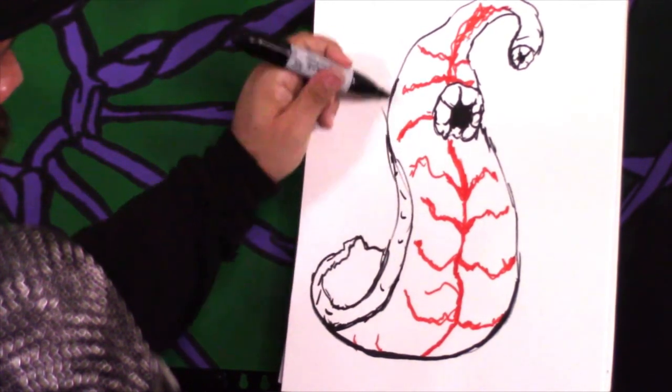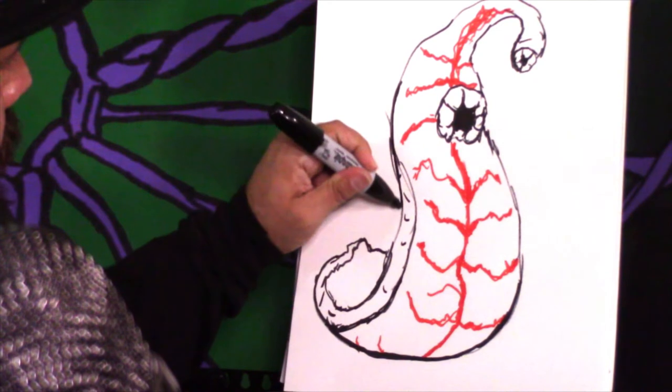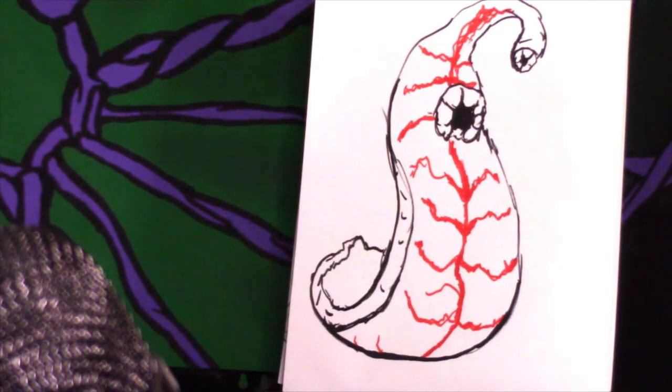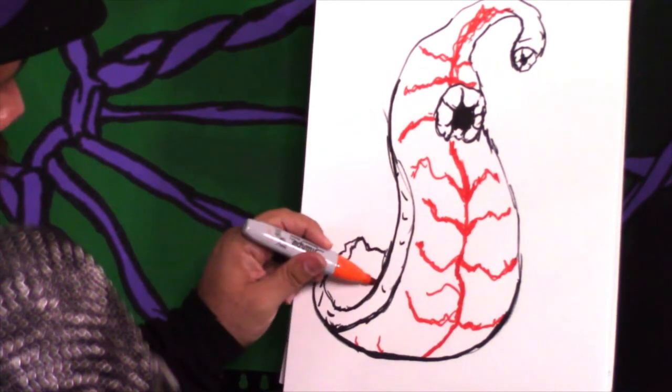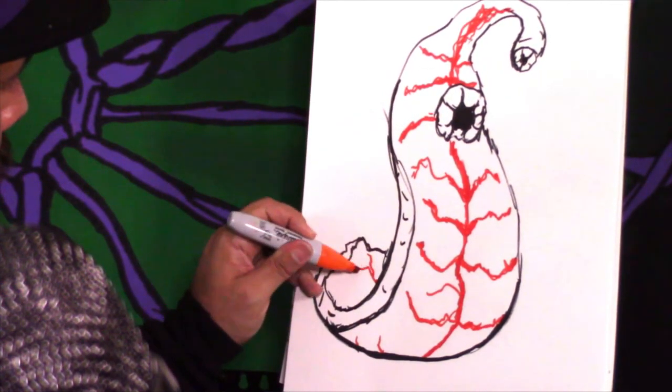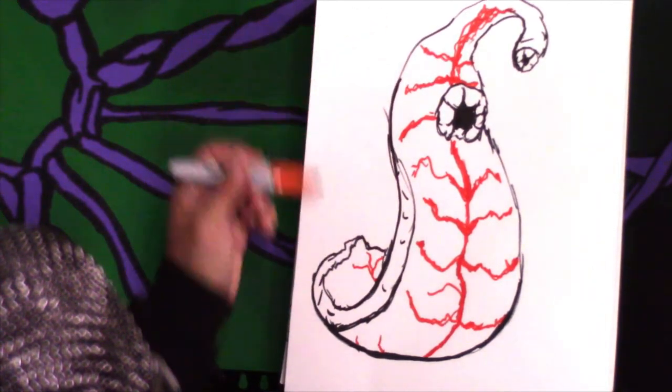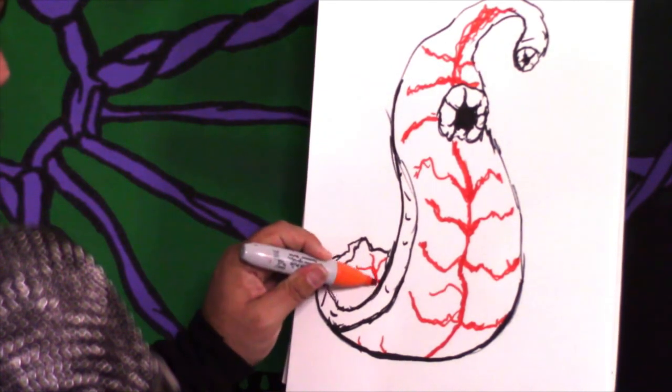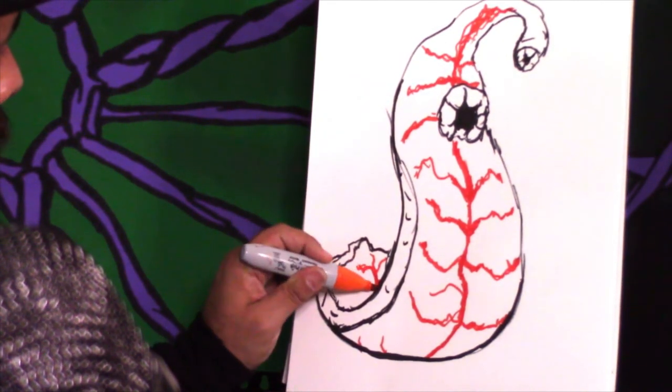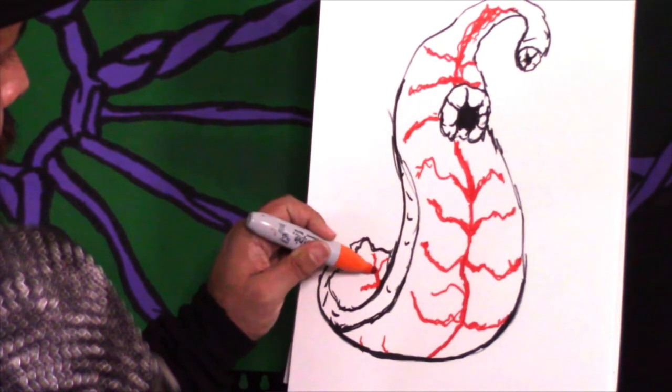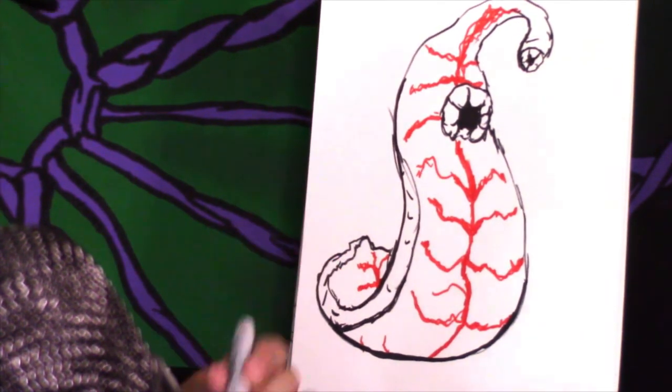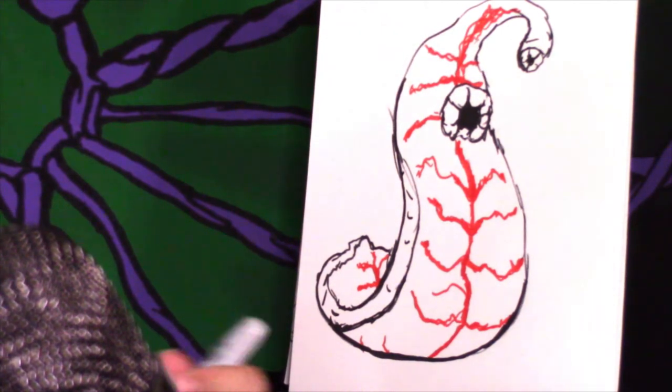Alright, there we go. And then I am going to add a little bit of veininess on the back end there, so it's kind of propped up in sort of an S pattern, almost rearing up like a snake. I don't think that they would do that, but this is my fictionalized version. I'll add a little bit of gold accents.